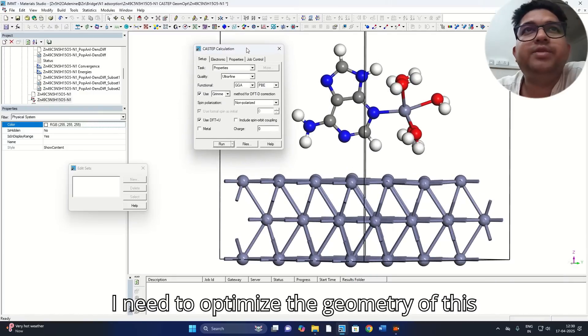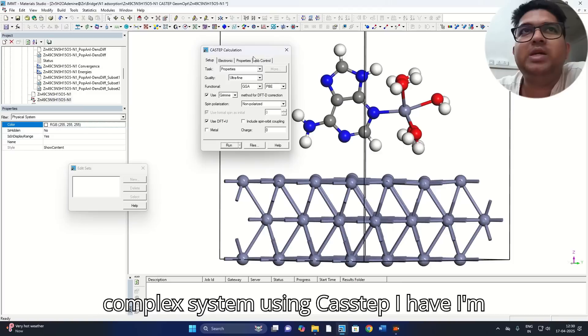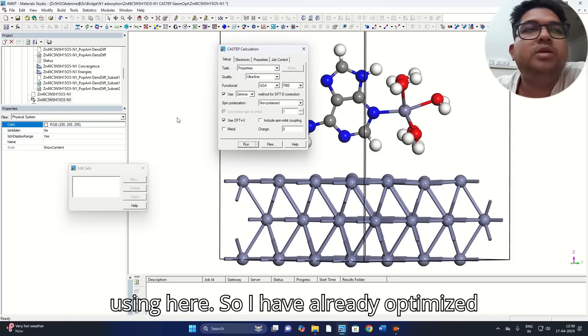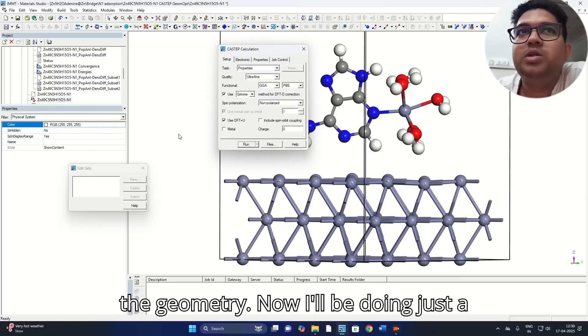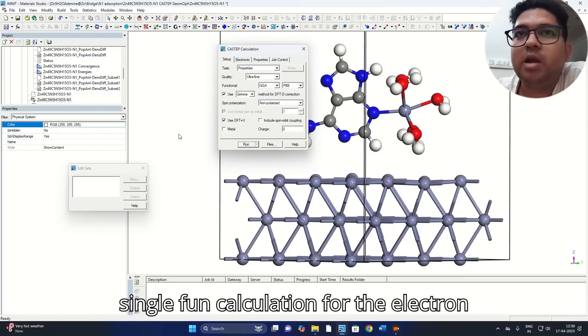So in this case, first I need to optimize the geometry of this complex system using CASTEP. I have already optimized the geometry, now I'll be doing just a single point calculation for the electron density difference.